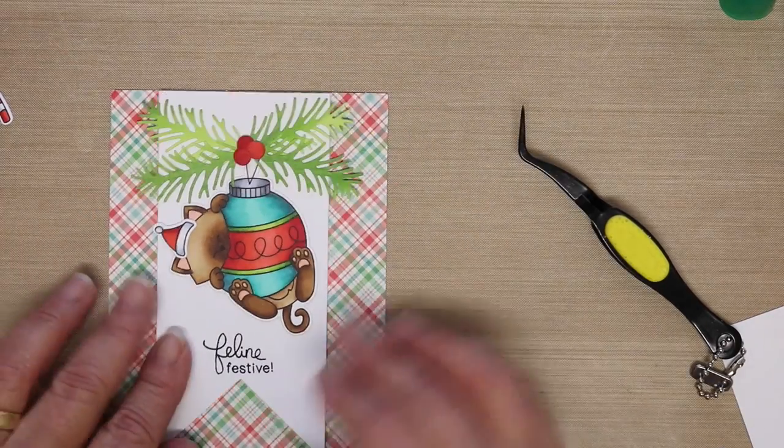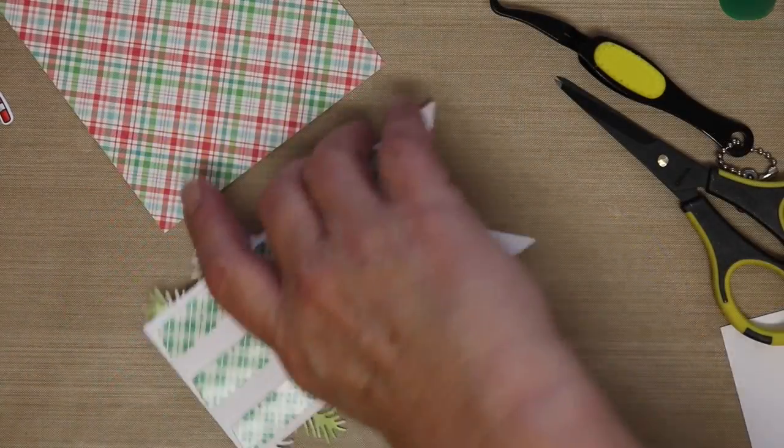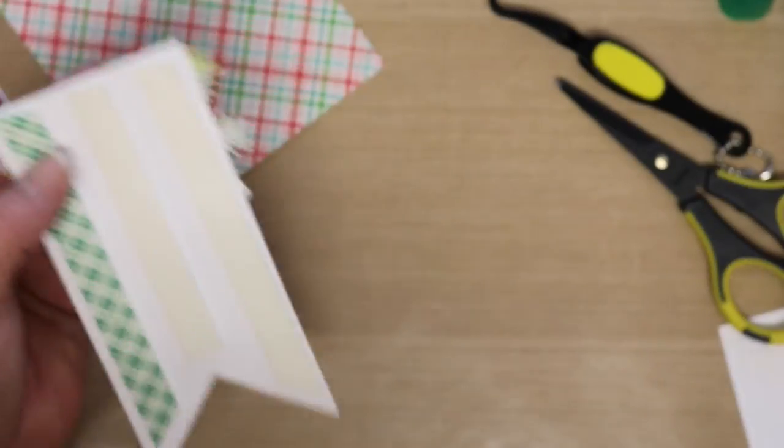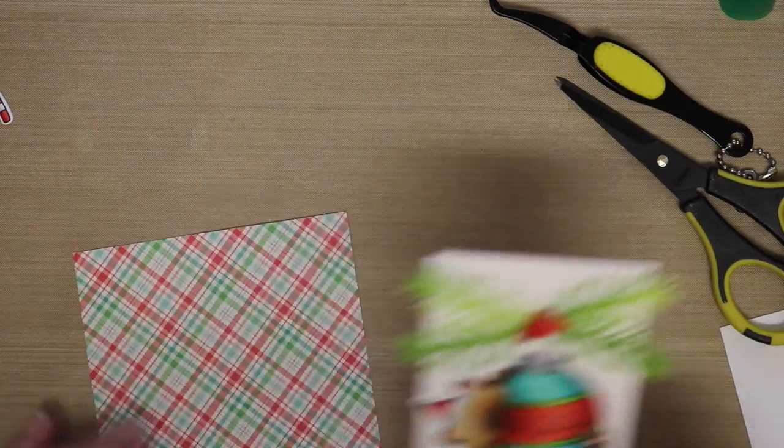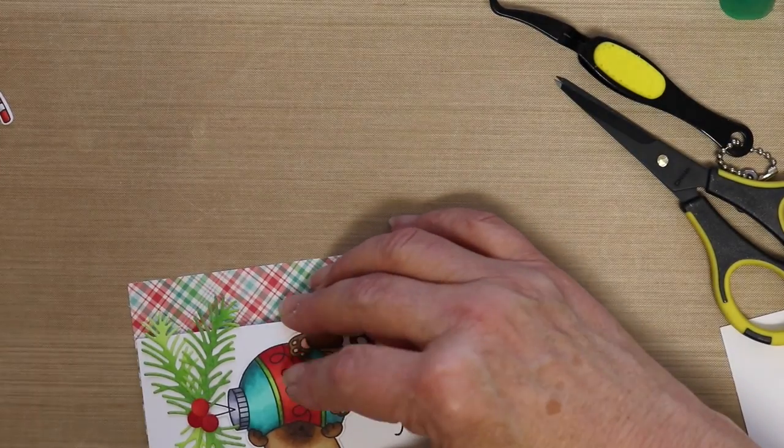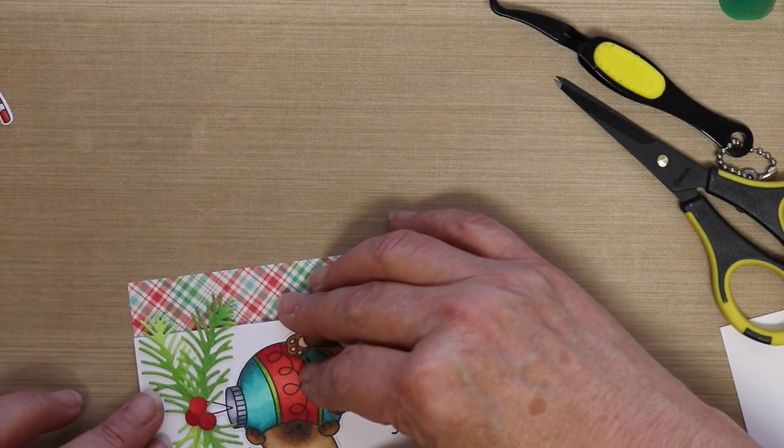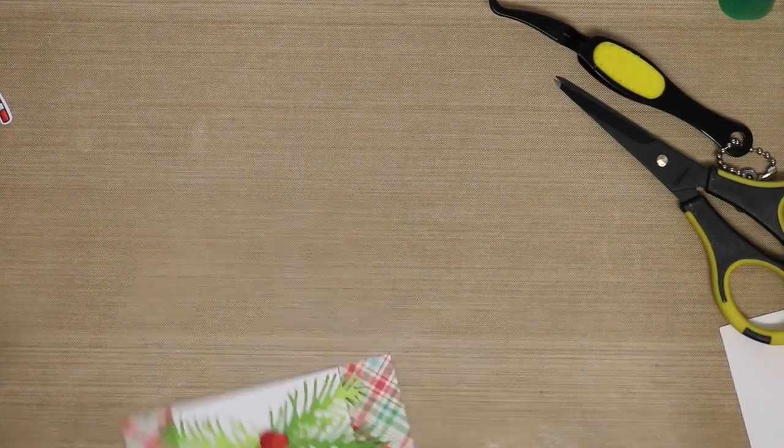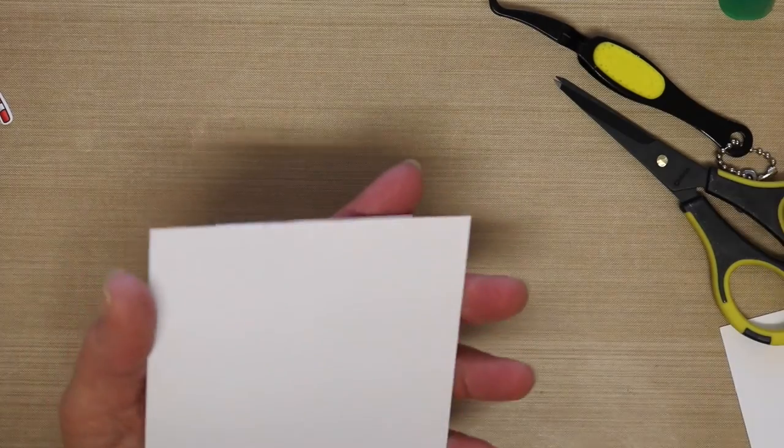And then for a little bit of dimension, I'm going to go ahead and pop up the banner using some foam tape. I'm going to place that on the patterned paper. And then I will adhere everything with some Tombow to an A2 top folding card.